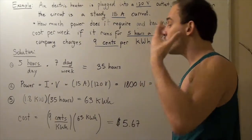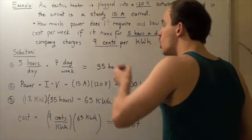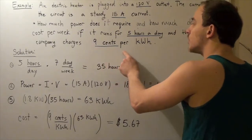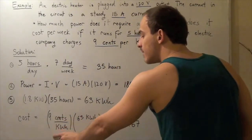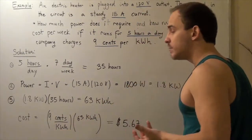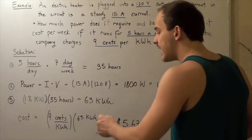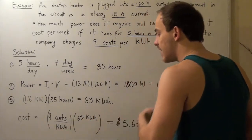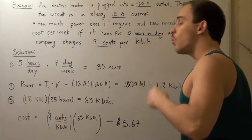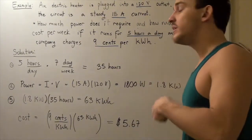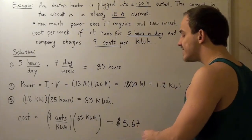To find the final cost per week when the company charges 9 cents per kilowatt hour, we take 9 cents per kilowatt hour multiplied by 63 kilowatt hours. The kilowatt hours cancel and we get 567 cents. Since there are 100 cents in a dollar, we divide by 100 and get $5.67.